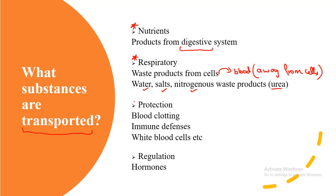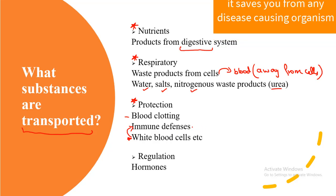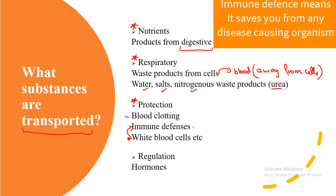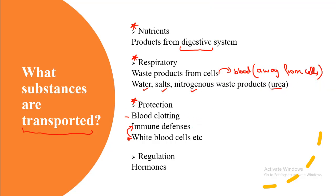Other than this, protection substances — such as those important for blood clotting, or white blood cells used for immune defense — are also circulated by the blood. Immune defense refers to mechanisms that protect you from disease-causing organisms. Regulation chemicals such as hormones are also transported by the blood. All these substances need to be transported by the blood, making circulation very important.